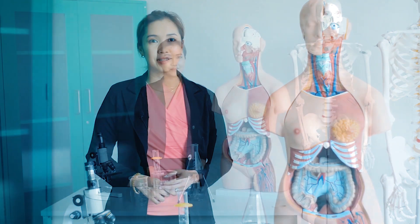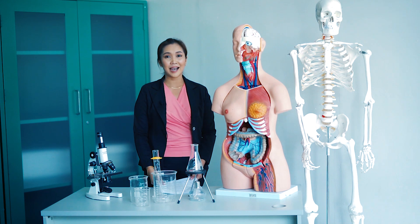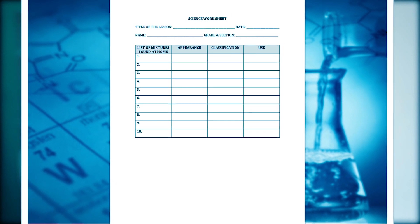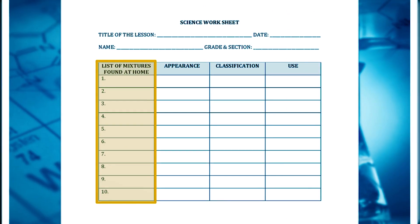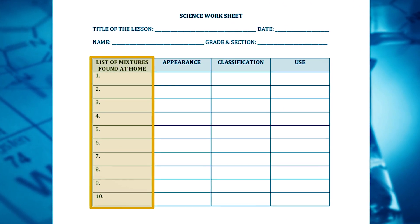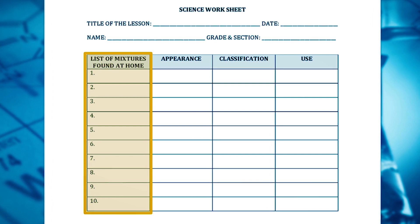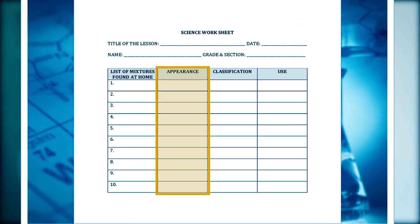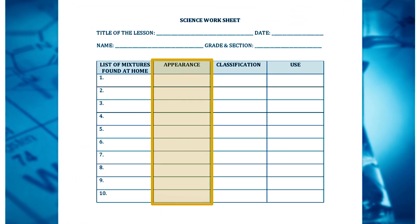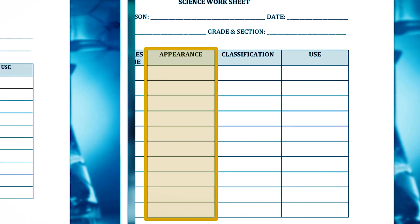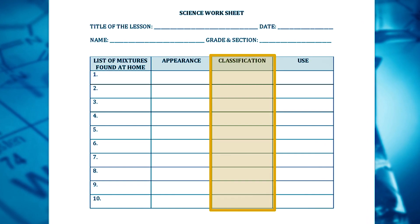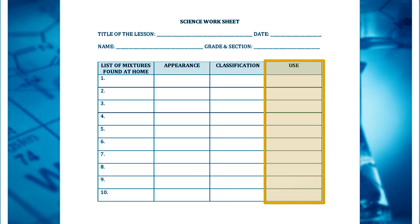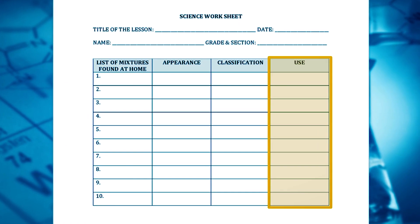Mixtures are commonly used in food preparation, construction, detergents, agriculture, and many more. For your assignment, look around inside your home and, using the worksheet, list down all the mixtures you see. The first column is for 10 mixtures found at home; the second column is to describe their appearance; the third column is to classify them as homogeneous or heterogeneous; and the fourth column is to determine what each is used for.